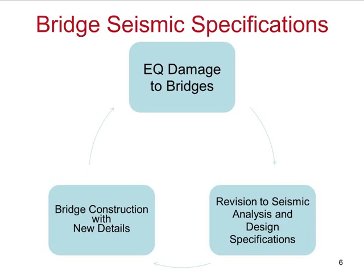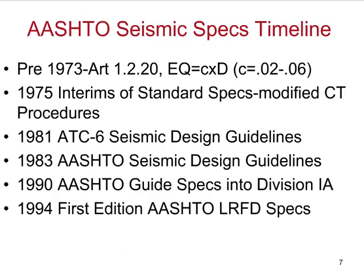As you see here, the important thing about changes in the seismic specs is that an earthquake happens, we have damage to the bridges, and this is a list of the specs and the time frame for them. The most important time is February 9, 1971 — yesterday was the anniversary of the 1971 San Fernando earthquake — which showed a lot of damage to bridges. And if you go through the standard specs under article 1.2.20, you would see that you have to design for a percentage of the weight, which is about 2% to 6%.